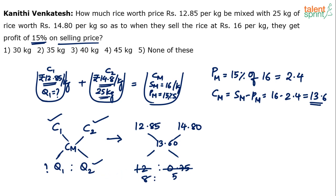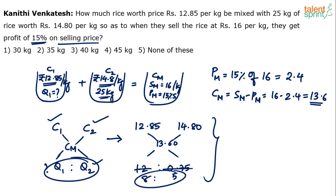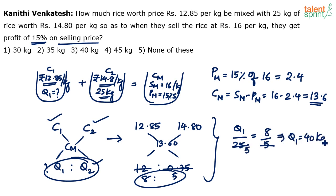So q1 to q2 is 8 to 5. Since q2 is 25 kg, we get q1 divided by 25 equals 8 by 5. Solving: q1 equals 8 times 25 divided by 5, which is 40 kg. This last step can be done mentally in the exam.